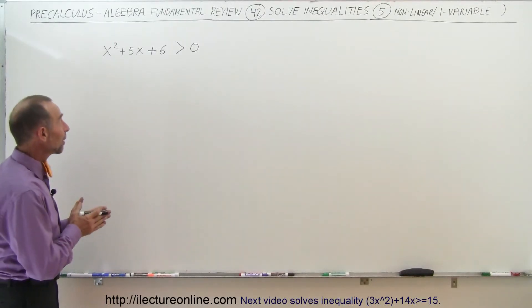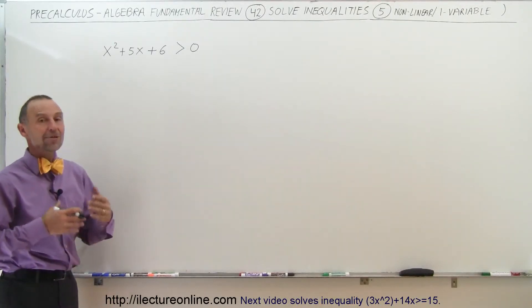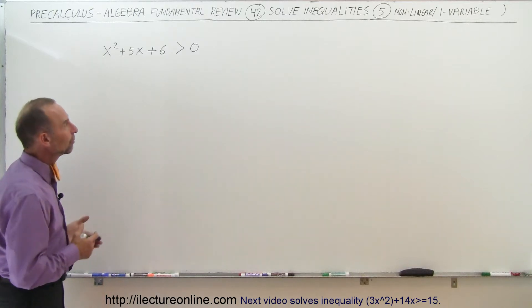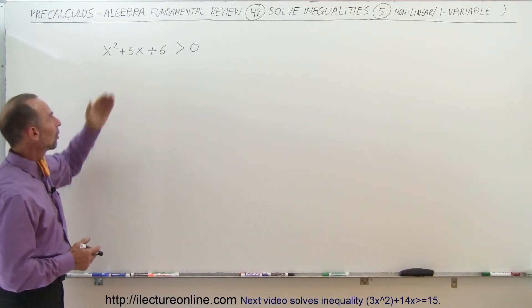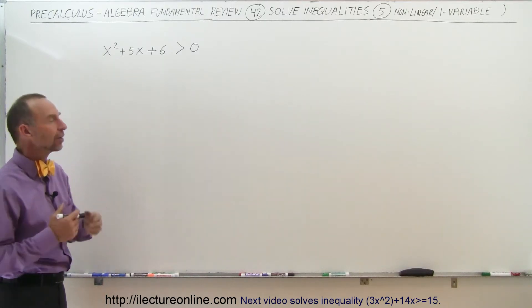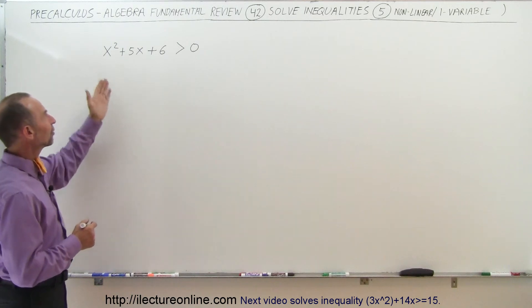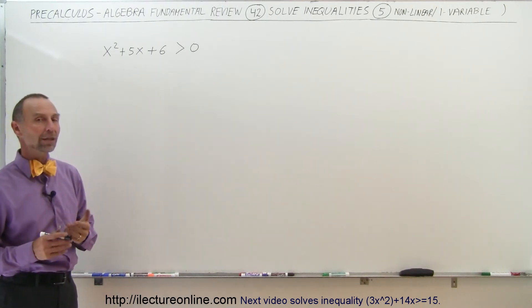Welcome to Electron Online. Here's our second example of how to solve a non-linear equation with just one variable. So here we have a trinomial and it's set greater than zero. So what values for x will satisfy this inequality?